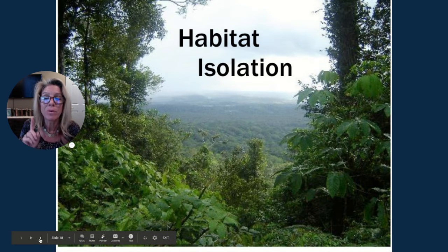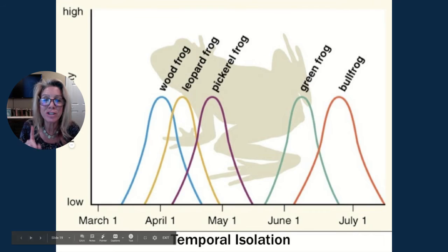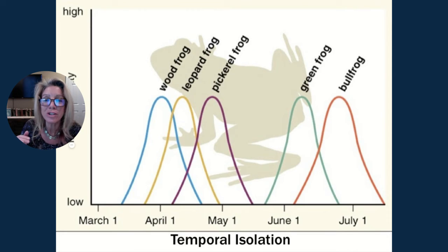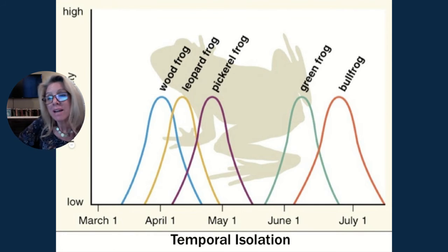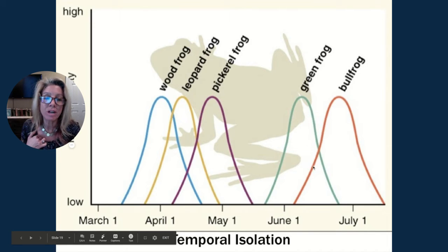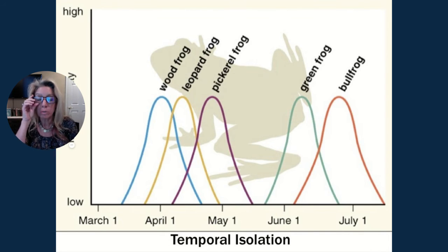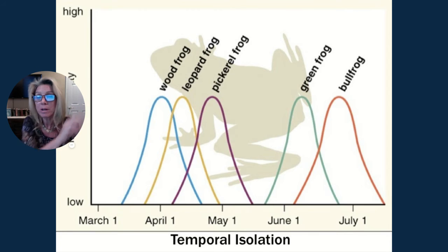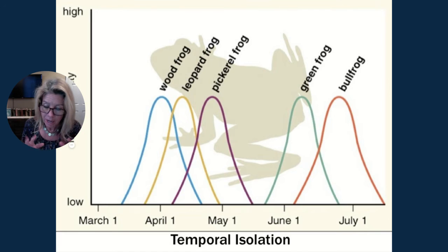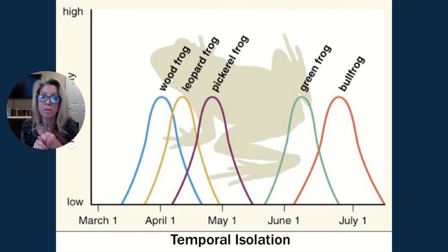Now let's level up: we are living in the same location — we're all frogs living on the edge of this pond. Temporal isolation means we may not want to mate at the same time. We have different times of the year when mating happens, or different locations — one on the edge of the water, one out in the middle, one up on a rock. Temporal isolation: different times or different locations within that habitat.